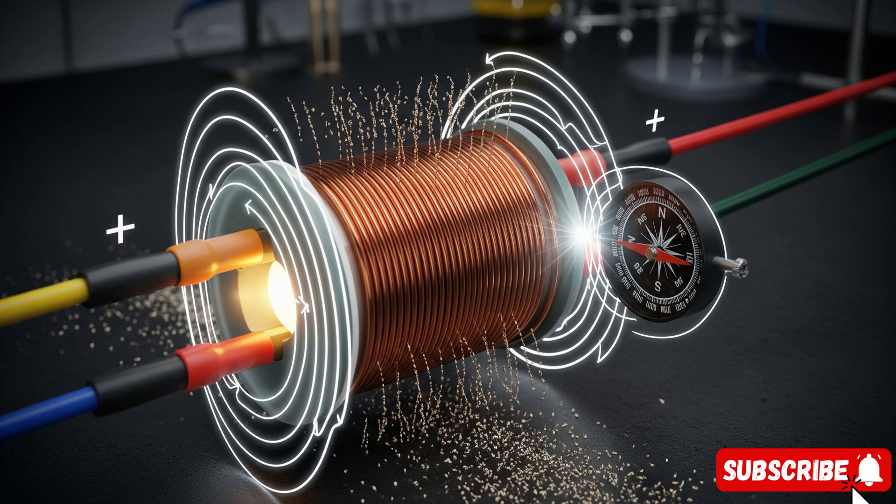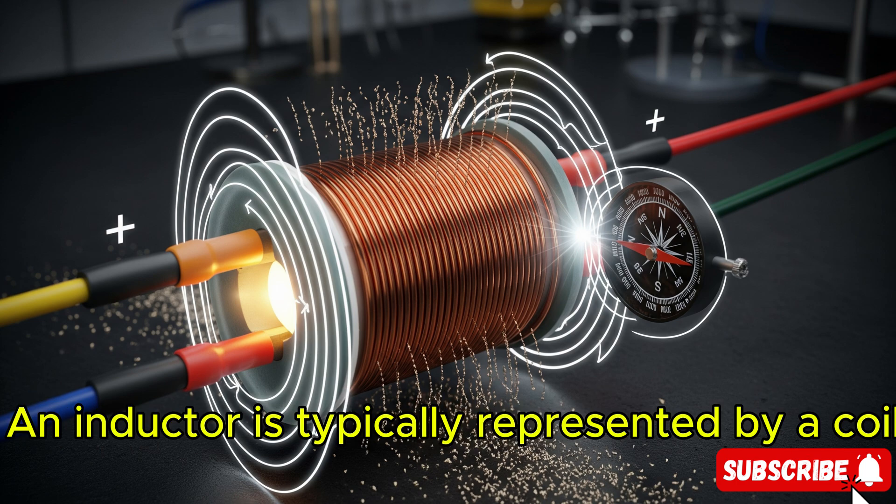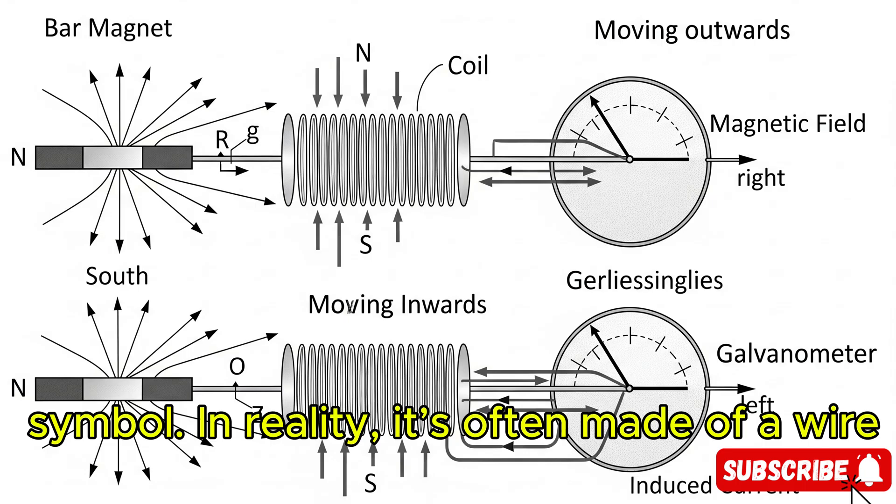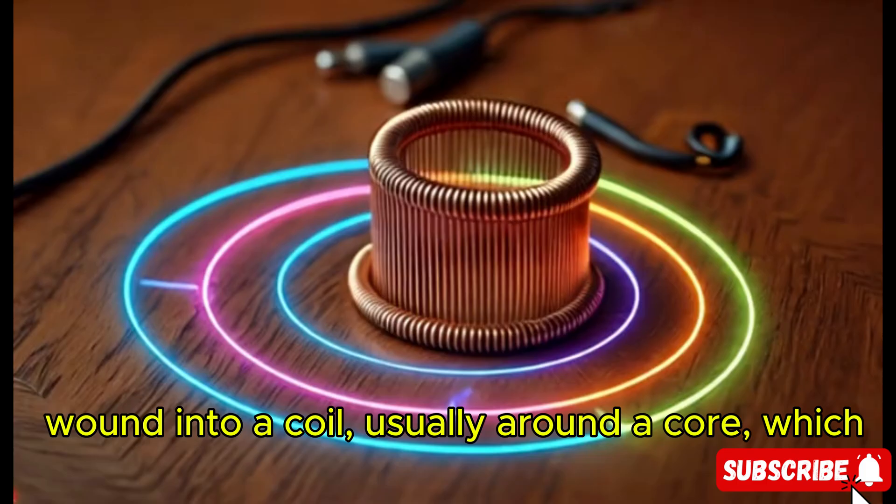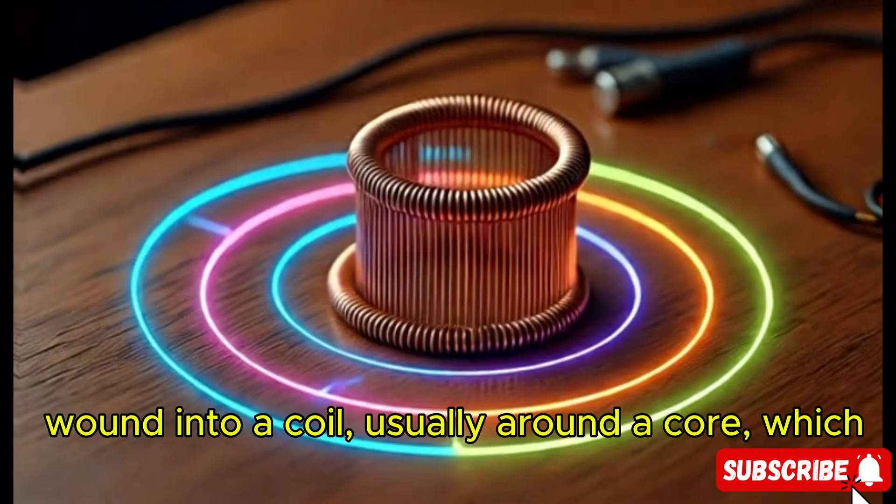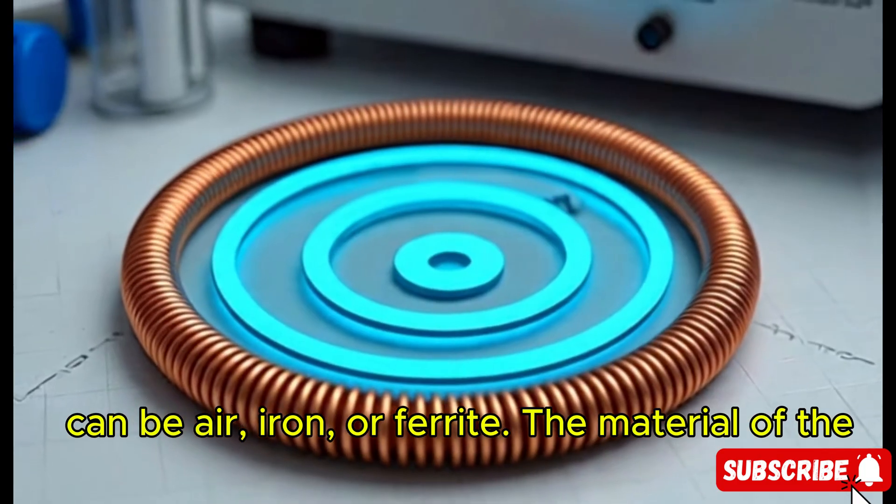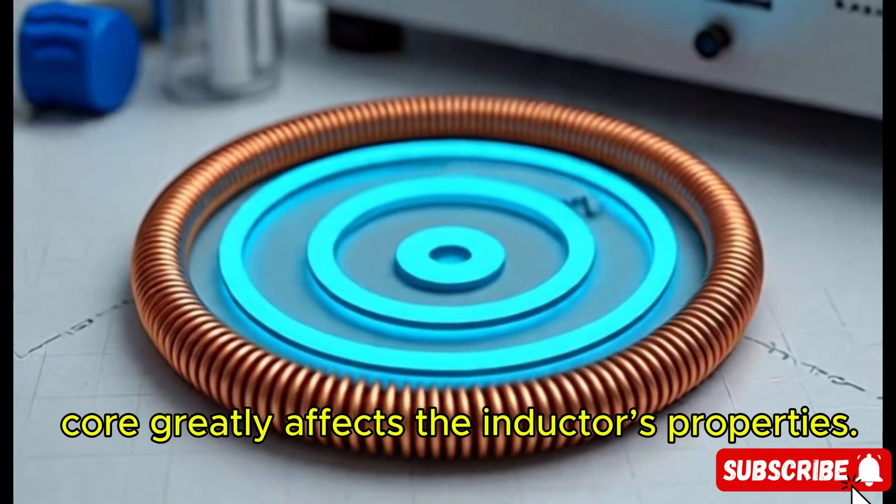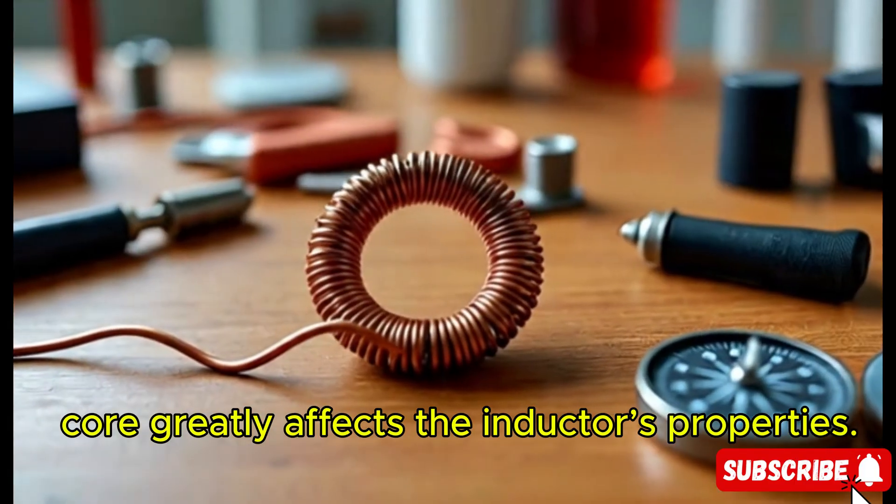An inductor is typically represented by a coil symbol. In reality, it's often made of a wire wound into a coil, usually around a core which can be air, iron, or ferrite. The material of the core greatly affects the inductor's properties.